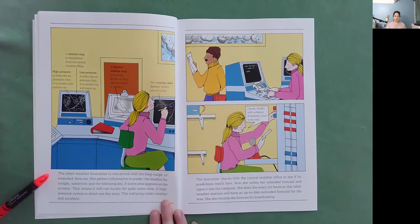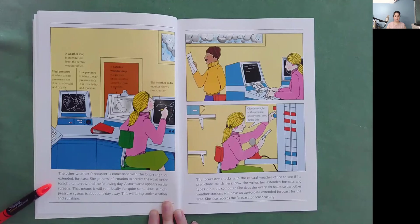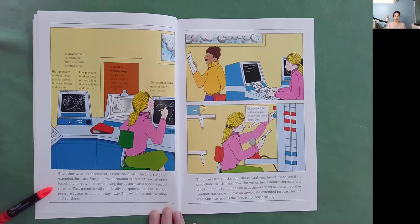The other weather forecaster is concerned with the long range or extended forecast. She gathers information to predict the weather for tonight, tomorrow, and the following day. A storm area appears on the screens. That means it will rain locally for quite some time. A higher pressure system is about one day away. This will bring cooler weather and sunshine.